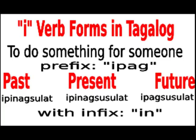E-verb forms. Generally, the meaning of the E-verb is to do something for another person. The E-verb is also the passive form of a mag-verb and seldom of an um-verb.